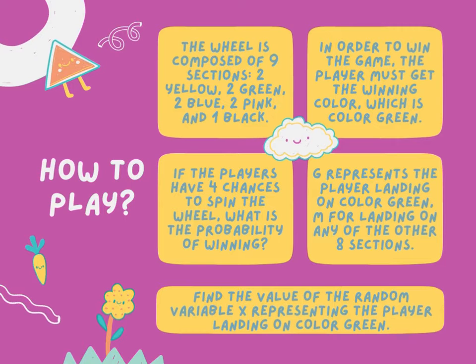In order to win the game, the player must get the winning color, which is color green. If the players have four chances to spin the wheel, what is the probability of winning? G represents the player landing on color green, and M for landing on any of the other eight sections. Find the value of the random variable X representing the player landing on color green.